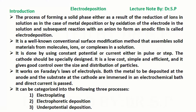Electrodeposition. The process of forming a solid phase either as a result of the reduction of ions in solution, as in the case of metal deposition, or by oxidation of the electrode in the solution and subsequent reaction with an anion to form an anodic film, is called electrodeposition. It is a well-known conventional surface modification method that assembles solid materials from molecules, ions, or complexes in a solution. It is done by using constant potential or current, either in pulse or step.